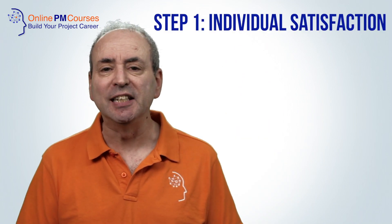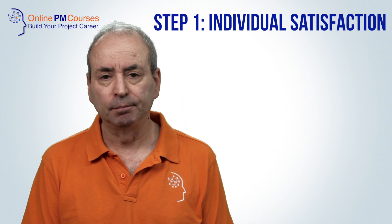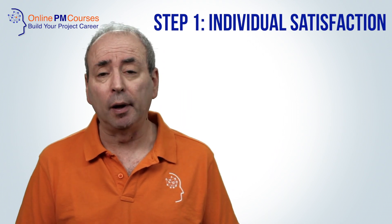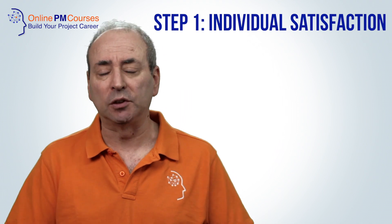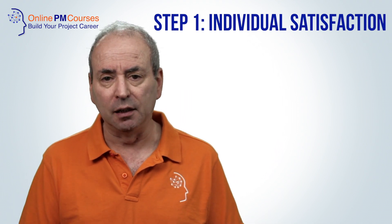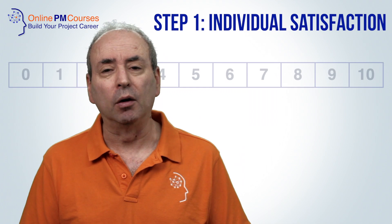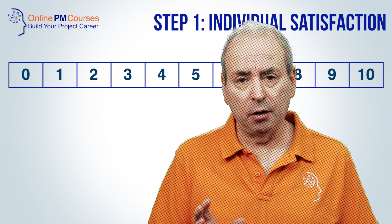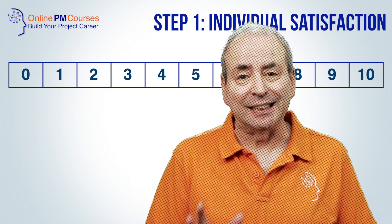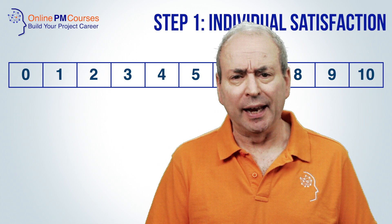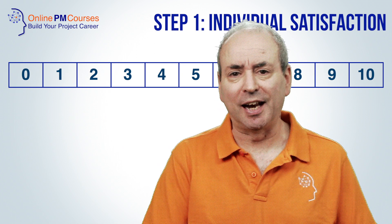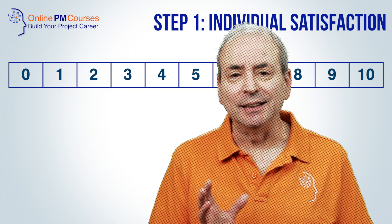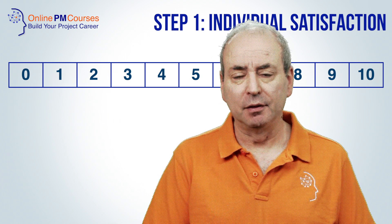I'll describe the basic process in three steps. Step one is about measuring individual stakeholder satisfaction. Calculating stakeholder satisfaction starts by asking each individual stakeholder to rate their own satisfaction on a scale of 0 to 10. I suggest starting at 0 rather than 1 because that's the honest way to do it — your stakeholder may have precisely 0 satisfaction. It also means that there is a precise midpoint: 5.